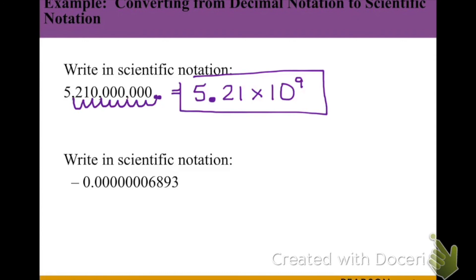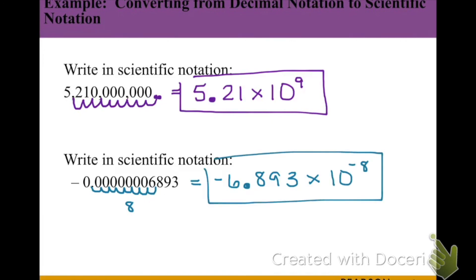For a smaller number, the decimal point is moved to the right to find a base between 0 and less than 10 — in this case, negative 6.893 (preserving the negative sign). Since we moved the decimal 8 places to the right, the exponent is negative 8, giving us negative 6.893 times 10 to the negative 8. Negative exponents refer to smaller numbers, and positive exponents refer to large numbers.